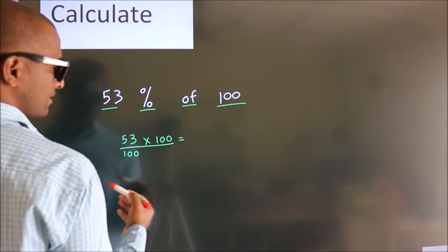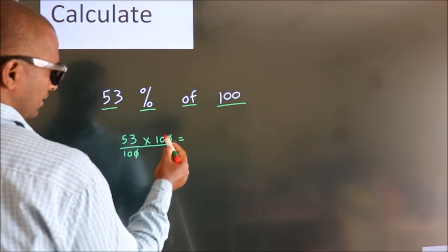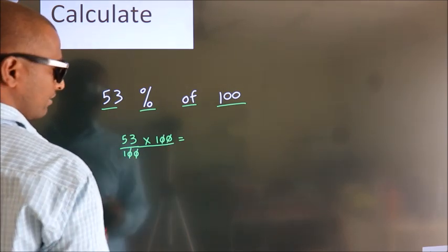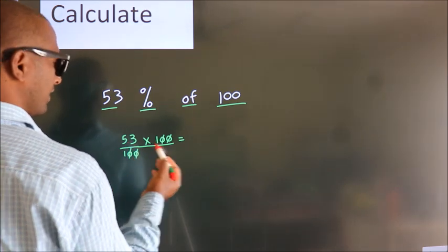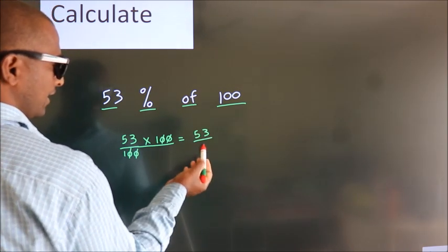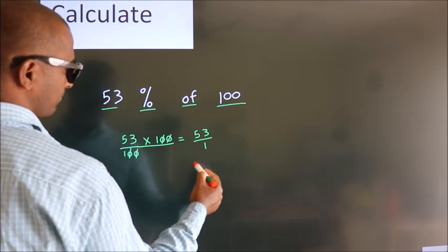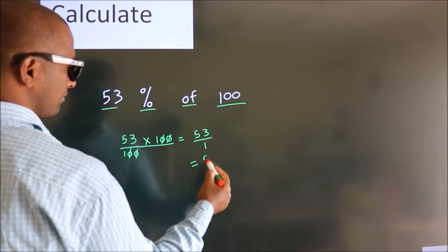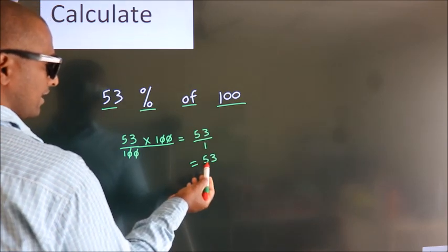I cancel this 0 with this, and this 0 with this. We are left with 53 into 1. That gives us 53 in the numerator and 1 in the denominator. 53 by 1 is 53. This is our answer.